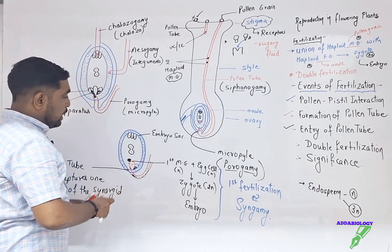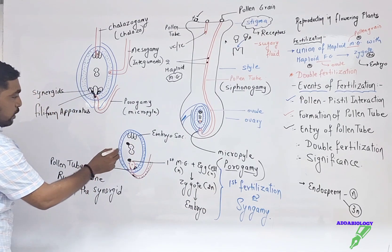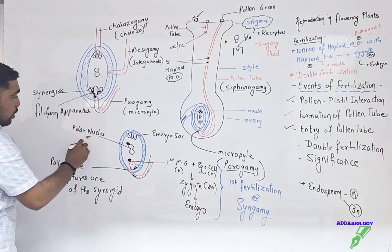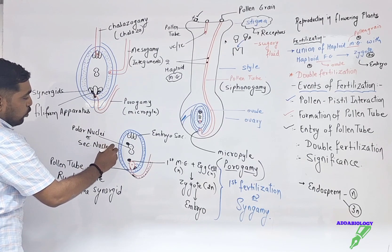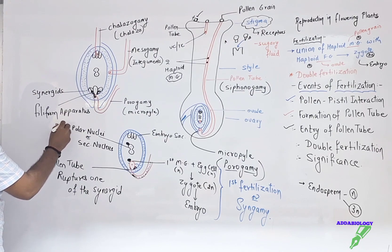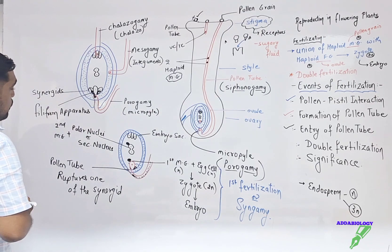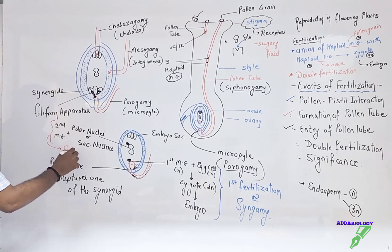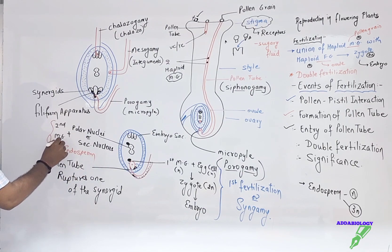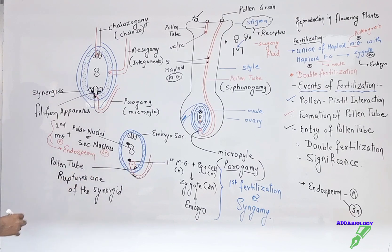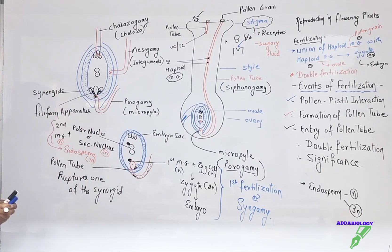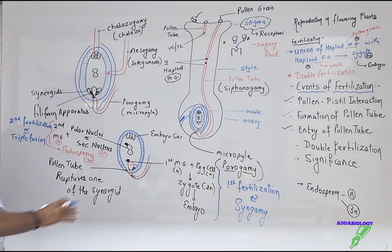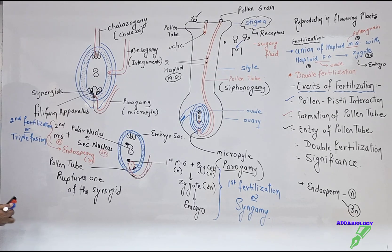The second male gamete goes to the secondary nucleus (polar nuclei). The second male gamete fertilizes the polar nuclei or secondary nucleus, and this results in the formation of the endosperm. The male gamete is n and the secondary nucleus is 2n, so the endosperm is 3n (n + 2n = 3n). This process is called triple fusion.